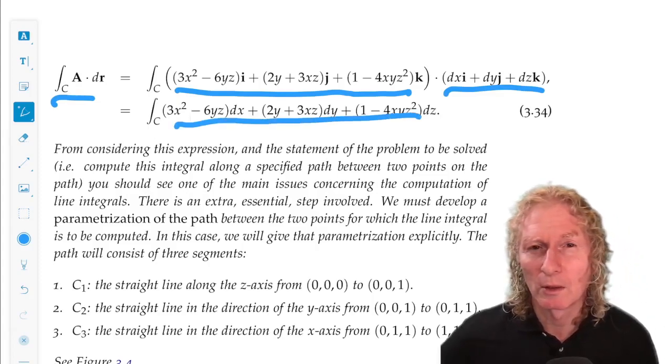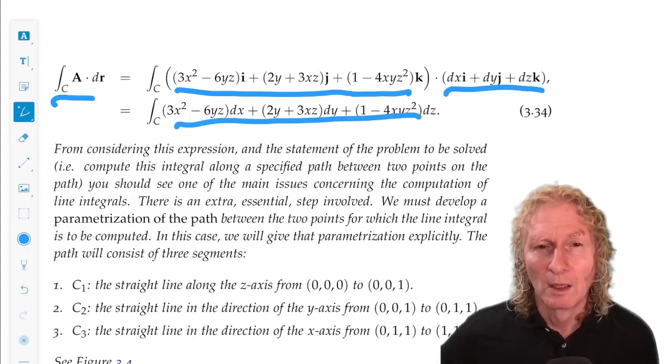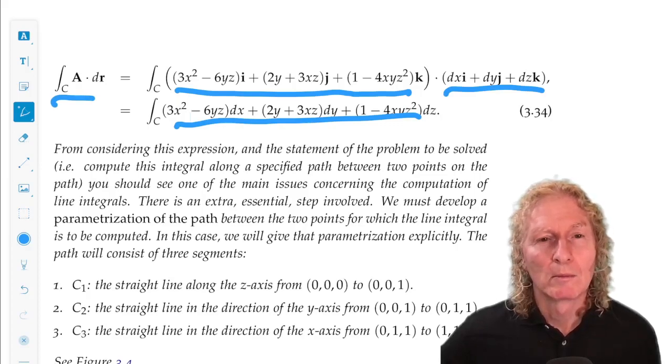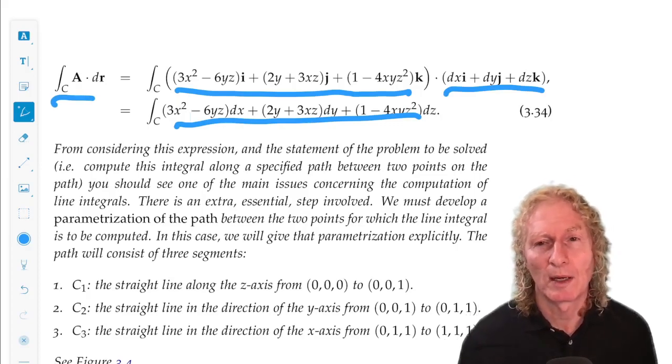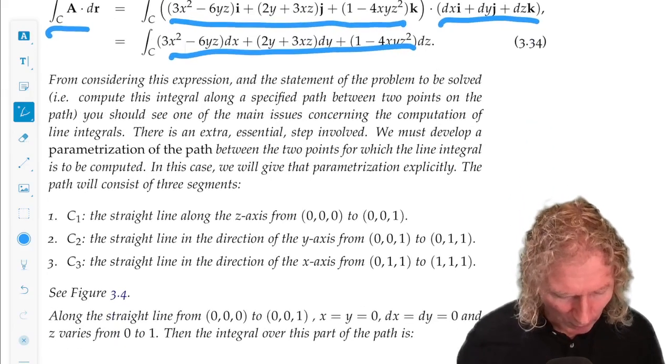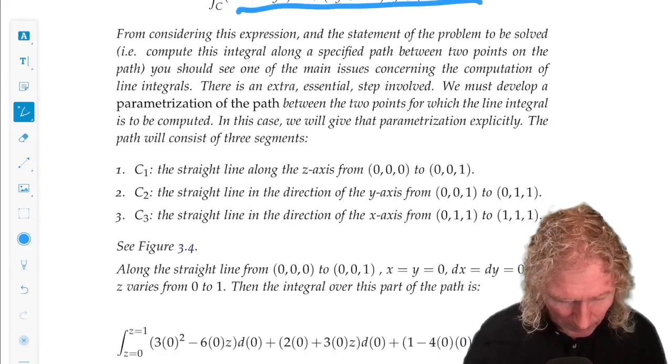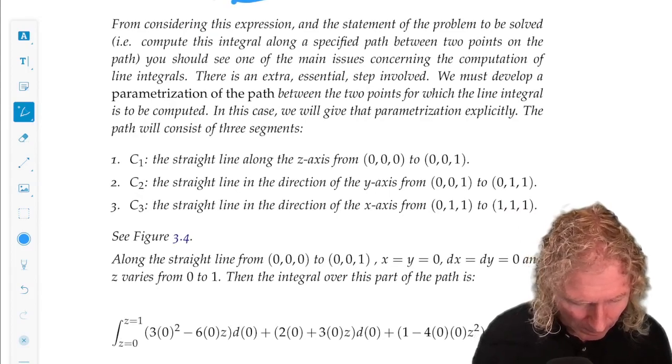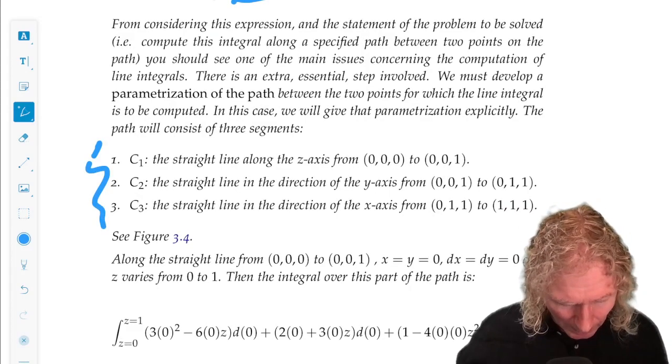And we want to integrate along these three elements of the path, whose sum gives us the entire path that we're asked to integrate over. So c1, c2, c3. And I've written them out here. So let's go c1.